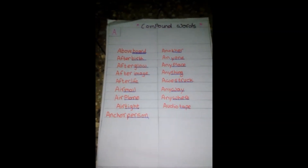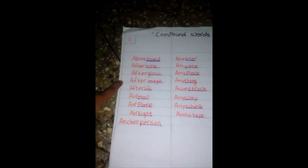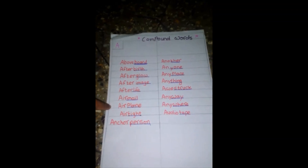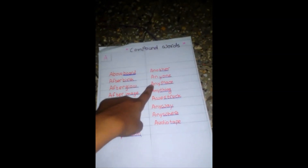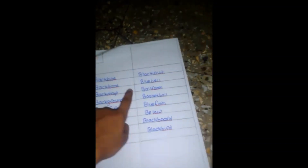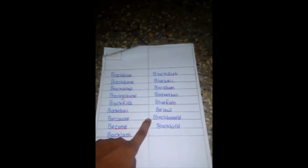We see compound words: above-board, afterwork, afterflow, after-email, after-life, airmail, airplane, air-type, anchor-person, another, anyone, any-place, anything, anyway, anywhere, audio-tape. Starting with alphabet B: backbite, backbone, backdrop, background, backfire, baseball, because, become, backlash, blackout, bluebell, ballroom, basketball, bluefish, below, blackboard, blackbird.